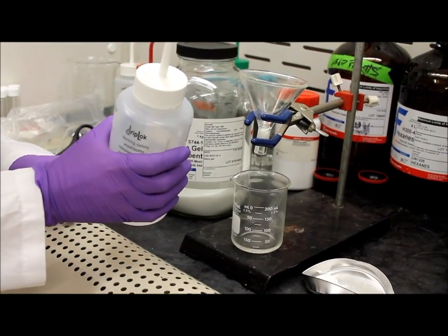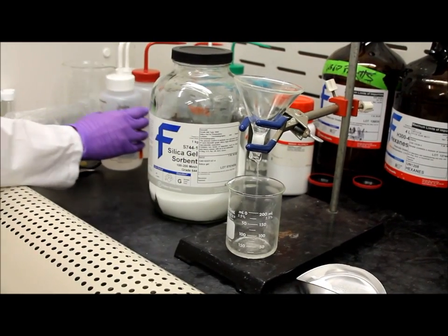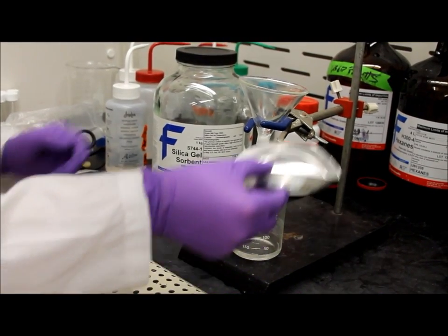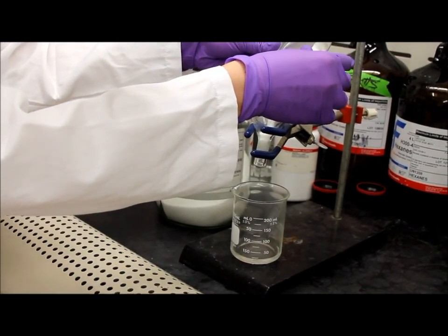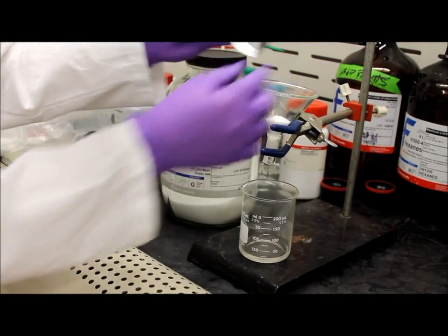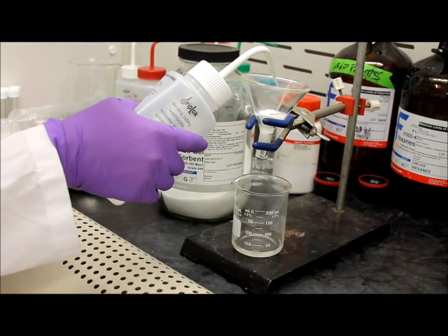Condition your glass wool with a little bit of hexane. Once that is done, pour your silica gel on top of the glass wool and condition your silica gel with a little bit of hexane again.